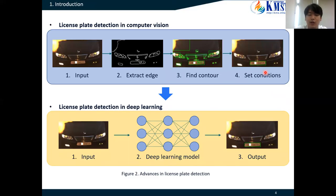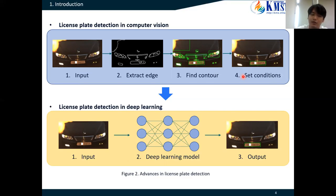This page shows the development of the license plate detection field. In the past, license plate detection and recognition was studied in the field of computer vision. However, a lot of preprocessing was required, and results depended on the set conditions. But nowadays, adapting deep learning networks into developing vehicle license plate detectors has made significant contributions to improve detection accuracy. By giving vehicle images to train the deep learning model, the computer automatically extracts features and detects objects. Unlike the computer vision method, this method does not require preprocessing and shows high accuracy. Therefore, studies using deep learning are being actively conducted.